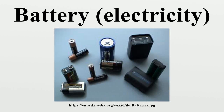The Daniel cell, invented in 1836 by British chemist John Frederick Daniel, was the first practical source of electricity, becoming an industry standard and seeing widespread adoption as a power source for electrical telegraph networks.